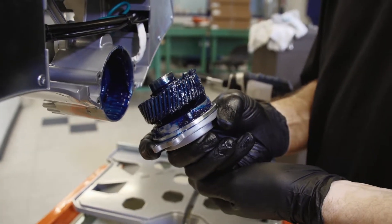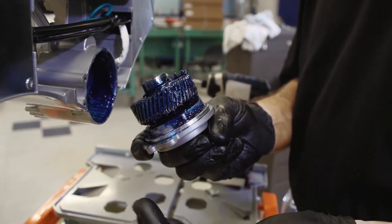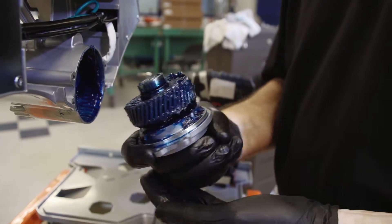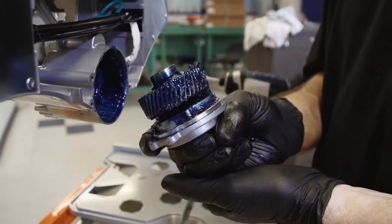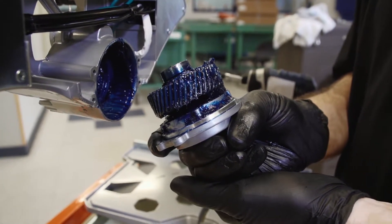Before installing the blade shaft assembly into the casting, make sure the gears are completely coated in grease. The grease that we use at the factory is a Mobil XHP222.